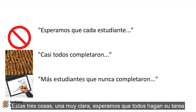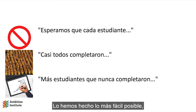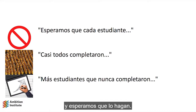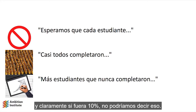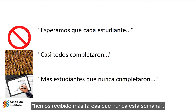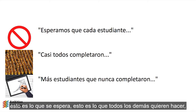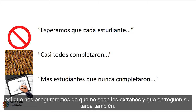In practice, these three things mean: one - be really clear, like 'we expect everyone to do their homework, we've made it as easy as possible, you can access it off your parents' smartphone, we'll print things out, and we expect you to do it'; two - emphasise that 80 or 90 percent of people handed in their homework. Clearly if the number is really low, don't say that - instead emphasise the changing trend, saying 'more homeworks have come in than ever this week.' The idea is to create a really strong sense in students' minds that this is what's expected and what everyone else wants to do. Very few people want to be the odd one out, so we're going to make sure they're not.